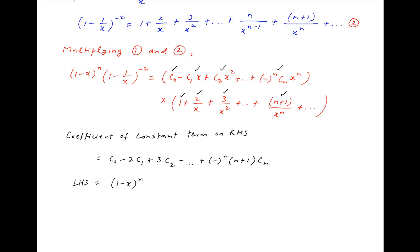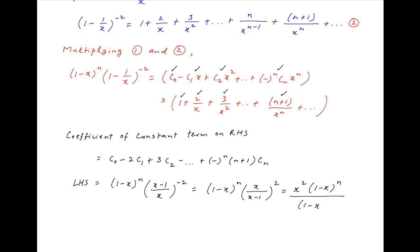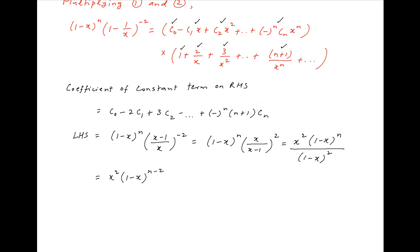The left hand side equals (1 - x)^n * (1 - 1/x)^(-2), which simplifies to (1 - x)^n * (x / (x - 1))^2, which equals x^2 * (1 - x)^n / (1 - x)^2, and therefore the left hand side equals x^2 * (1 - x)^(n-2).